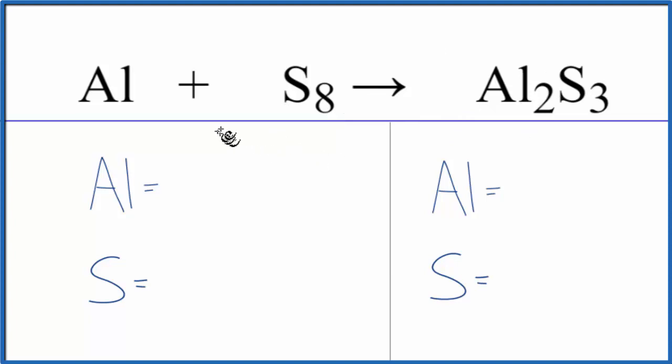So let's count the atoms up and balance the equation. One aluminum, eight sulfur atoms, product side, two aluminums, three sulfur atoms.